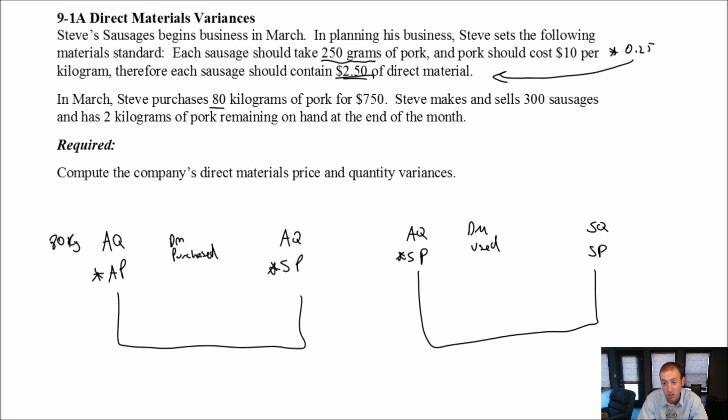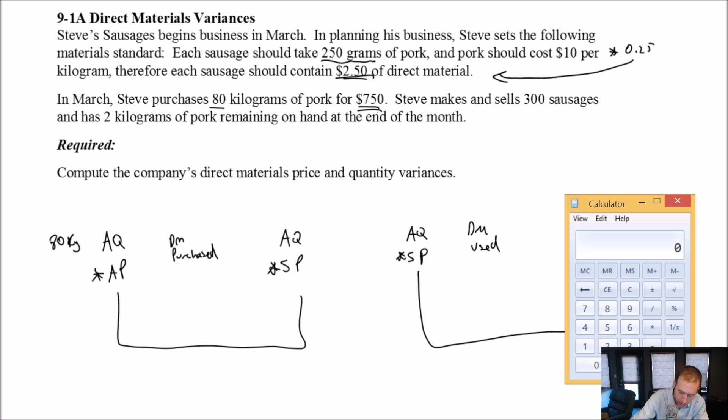So that's our AQ. Remember, for materials, quantity is going to be measured in kilograms, liters, pounds, some unit of measure here, ounces. Actual price, what was the price he paid per kilogram? Well, we don't know the actual price, but we know that in total he paid $750.